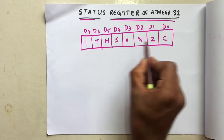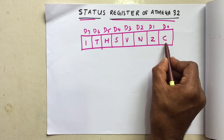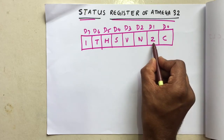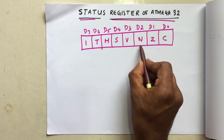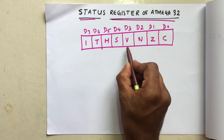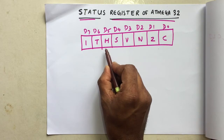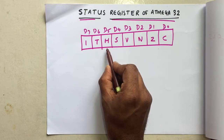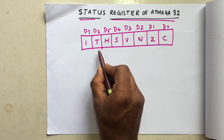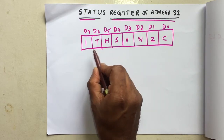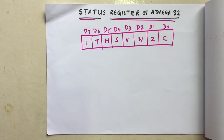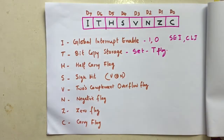There, C is for carry, Z is for zero, N is for negative, V is for overflow, S is for sign bit, H is for half carry, T is for bit copy storage, and I is for global interrupt enabled. You can see all these things here.